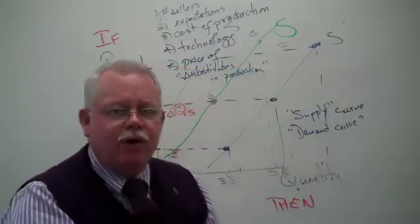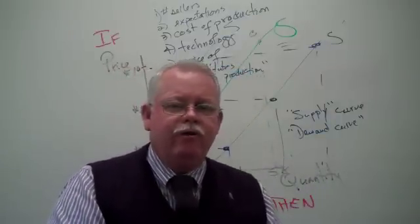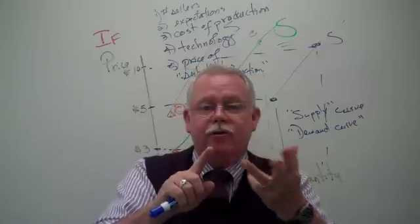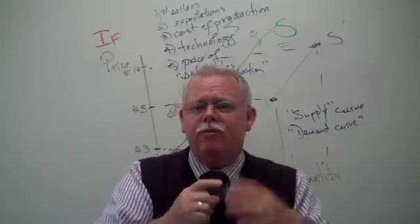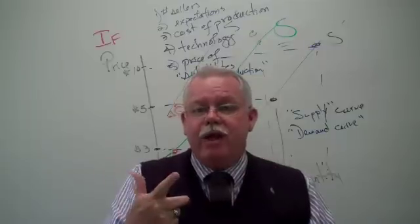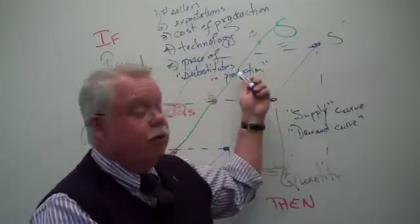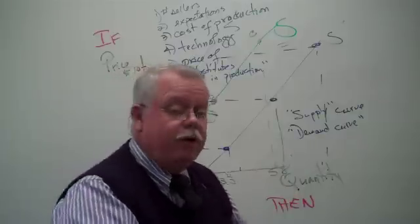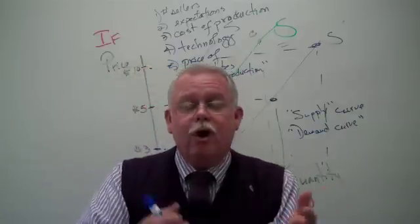It just occurs to me, I left off the fifth one about demand a while ago. You know what it is? We had what? Number of buyers, expectations, tastes and preferences, incomes. What was the other thing that changes the demand curve? And the answer is the price of other goods. Other goods meaning either substitutes or complements.